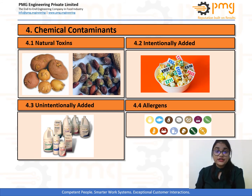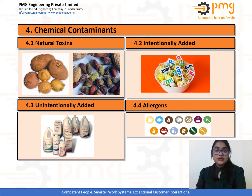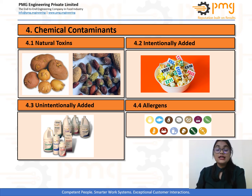Let us now move on to our next category: chemical contaminants. Chemical contamination is defined as any substance that can cause a health problem when ingested or inhaled. They include toxins, dangerous chemicals, and residue of excess chemicals used in the processing of food products. If your facility follows good manufacturing practices, you can prevent these chemical hazards very easily. These chemicals can be broadly grouped into four categories. The first category includes chemical contaminants that occur naturally in food products — toxins produced by plants, animals, or microorganisms — for example, aflatoxins in peanuts, neurotoxins in mushrooms, and glycoalkaloids in potatoes.